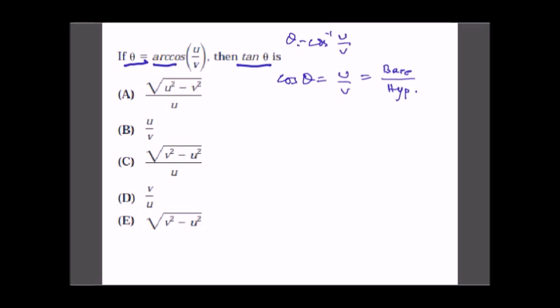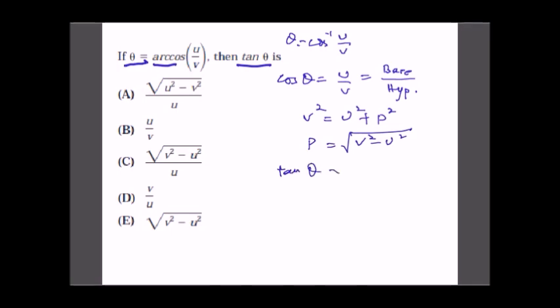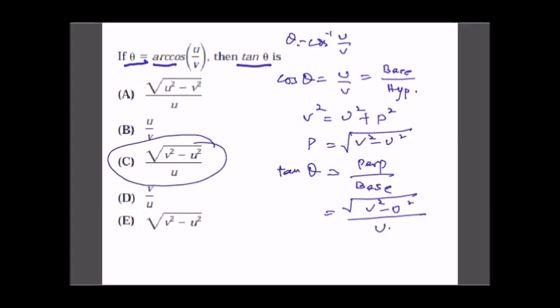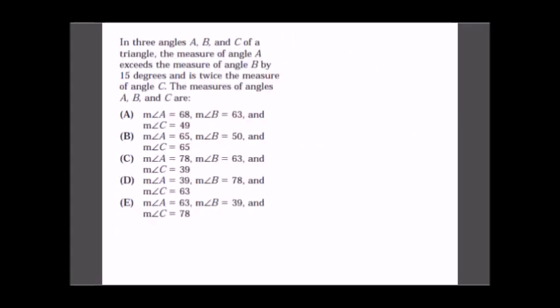We need to find the perpendicular. Using the Pythagorean theorem: hypotenuse² = base² + perpendicular², so v² = u² + p², which gives p = √(v² - u²). Therefore, tan θ = perpendicular/base = √(v² - u²) / u. This is our answer, which is option C.